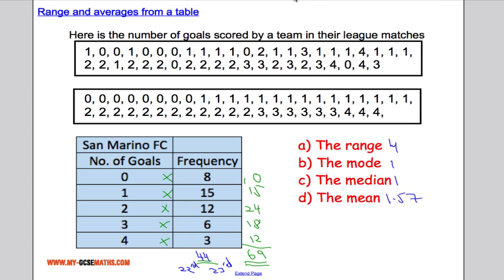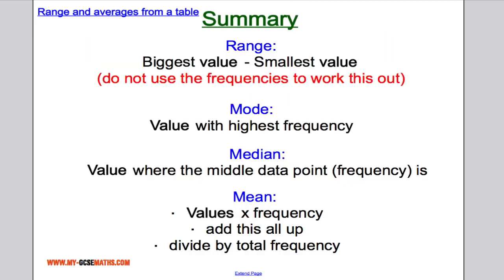Okay, so let's just summarize what it is we've discussed here. The range, as I said, is the biggest value, take away the smallest value. So don't use your frequencies to work this out. The mode is the value that has the highest frequency. The median is the value where we find the middle data point. And the mean, we do values times by frequency, add them all together, and then divide that by the total frequency.